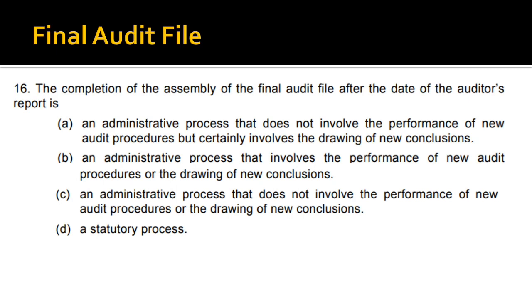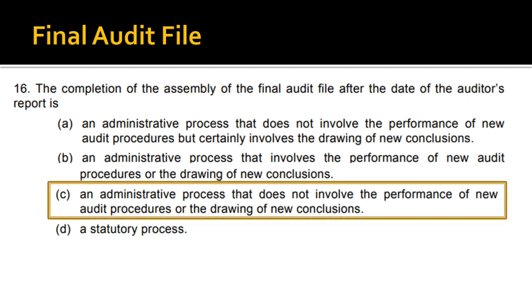Next: the completion of the assembly of the final audit file after the date of the auditor's report is an administrative procedure. After the audit is completed, we are compiling the audit file. It should not include any new conclusions — we have already done our audit. This is just an administrative procedure where we need quality control over the data we have collected. It does not involve performance of new audit procedures or drawing new conclusions. The correct answer is C — an administrative procedure.